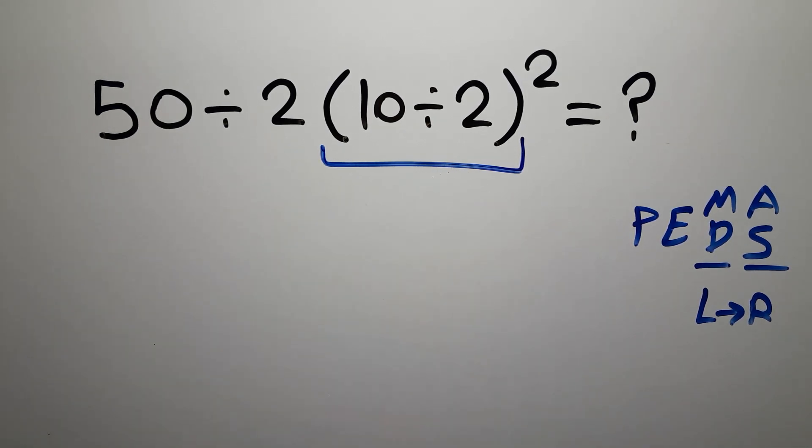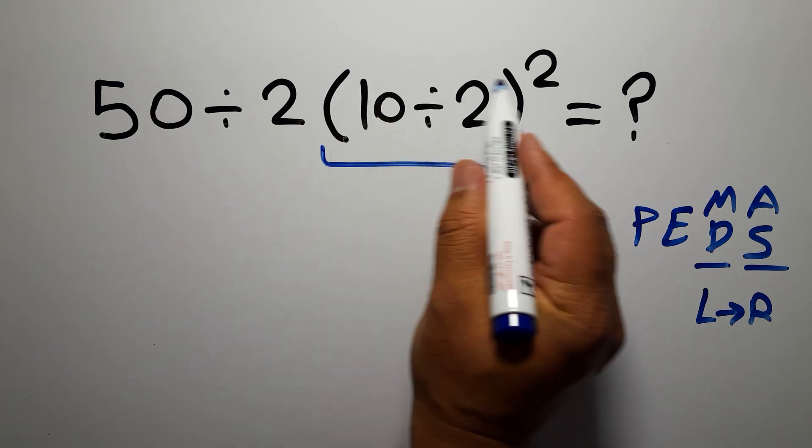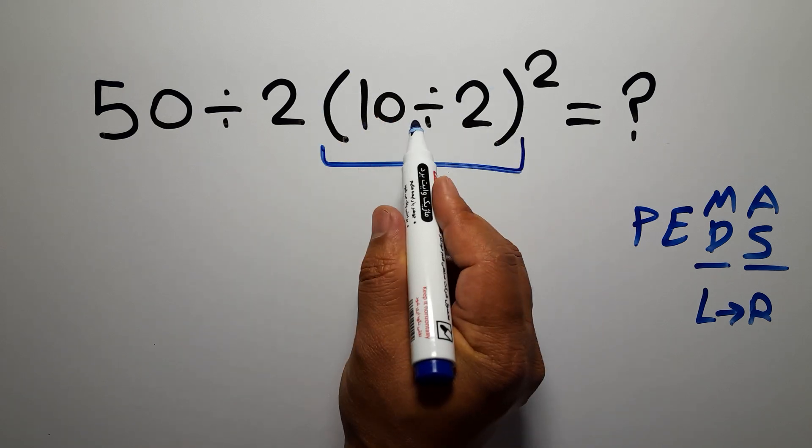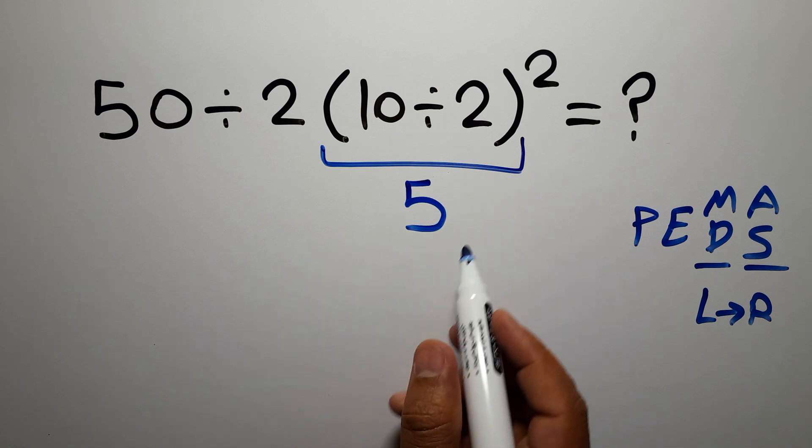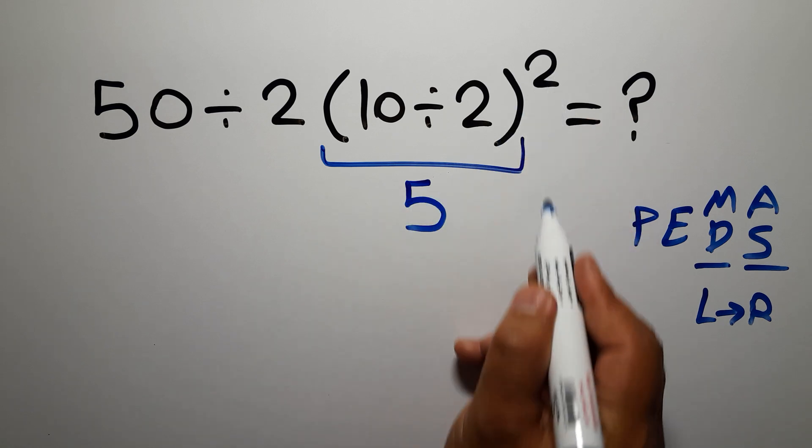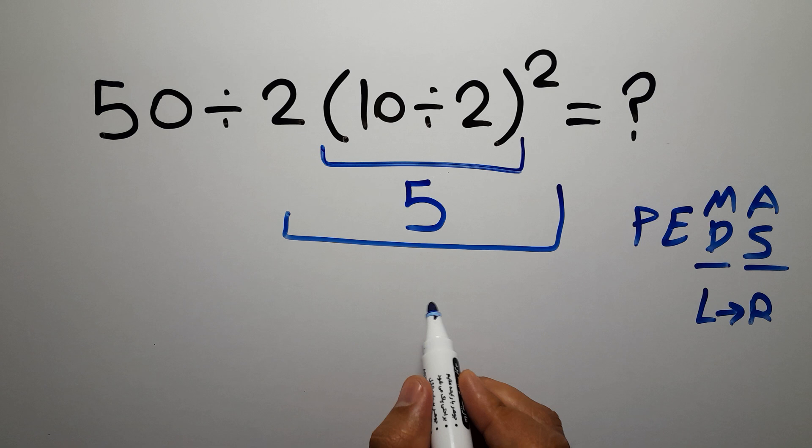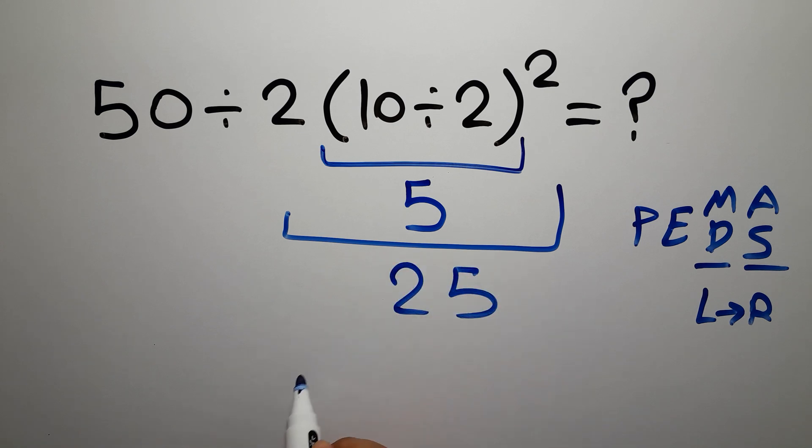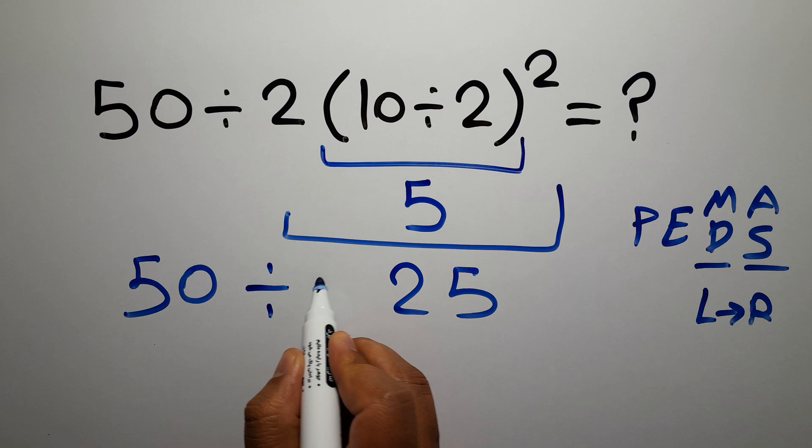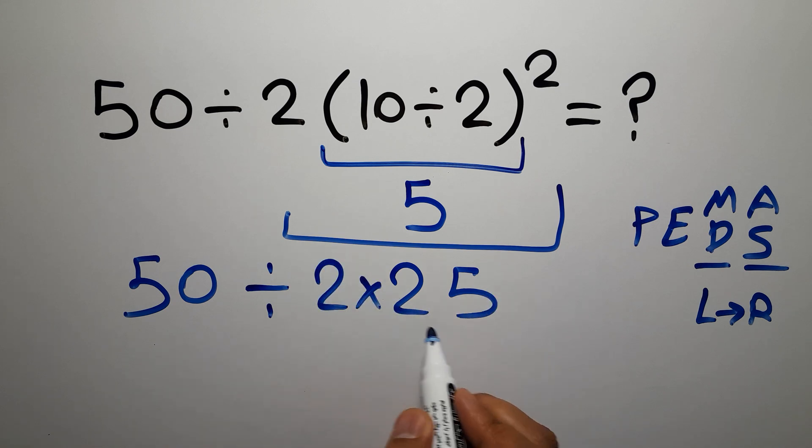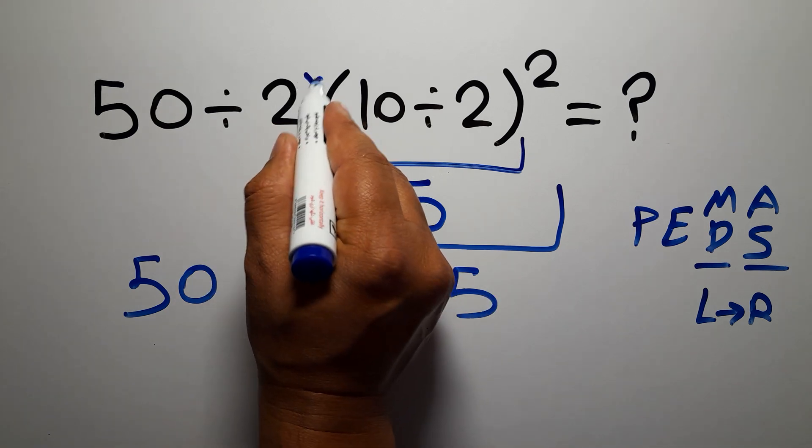So first we do the parentheses. Inside the parentheses we have 10 divided by 2, which equals 5. Now we have 5 squared, which equals 25. So we have 50 divided by 2, then times 25. Here we have a multiplication...